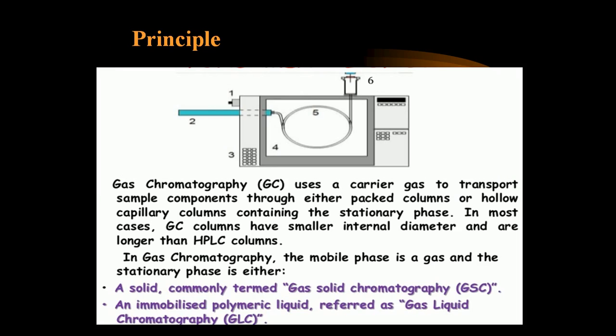Gas chromatography uses a carrier gas to transport sample compounds through either packed column or hollow capillary column that contains the stationary phase. In most cases, GC columns have a smaller internal diameter and are longer than HPLC columns. In gas chromatography, the mobile phase is a gas. The stationary phase can be gas-solid chromatography, or if the stationary phase is an immobilized polymeric liquid, then it is referred to as gas-liquid chromatography.